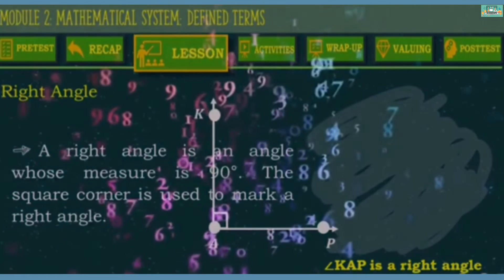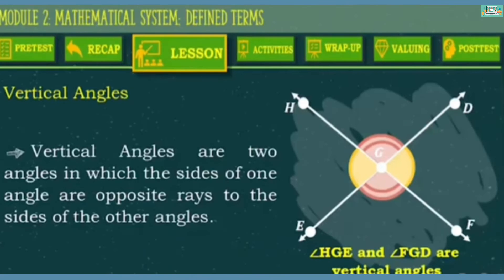Next, we're going to define vertical angles. Vertical angles are two angles in which the sides of one angle are opposite rays to the sides of the other angle. Examples of vertical angles are angle HGE and angle FGB. We can also say that angle HGB and angle FGE are vertical angles.